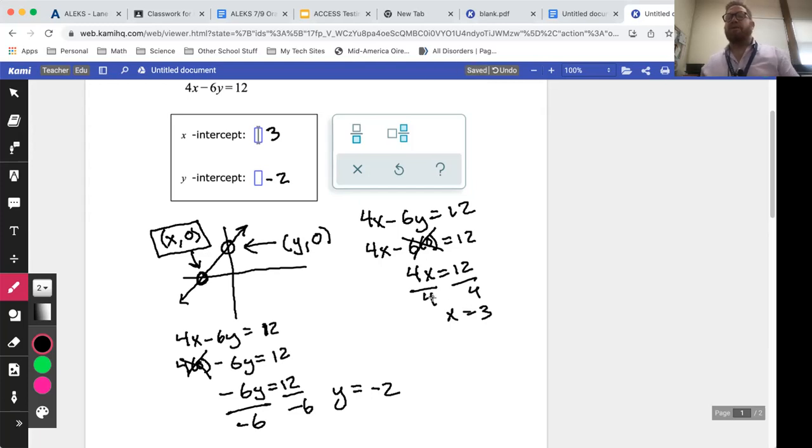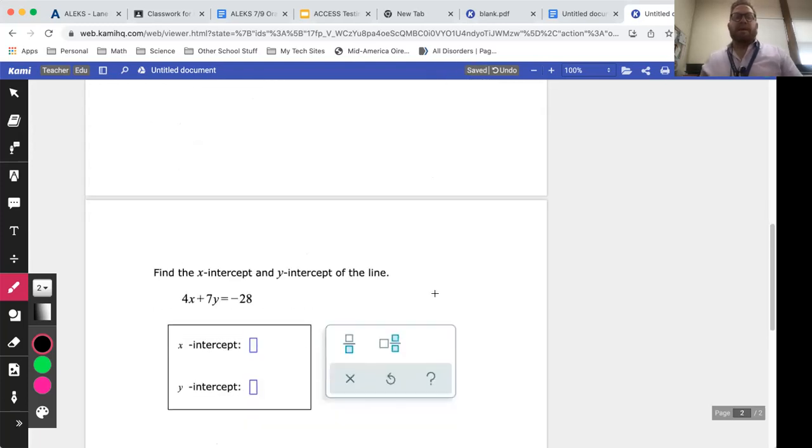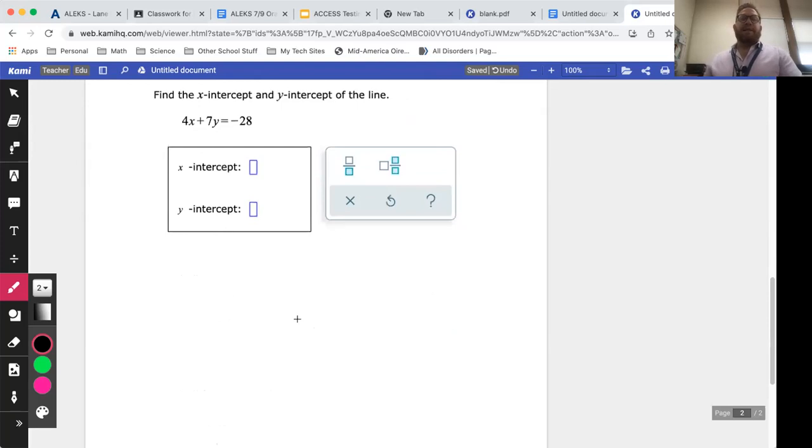Let's try one more. For this one, same concept. To solve for your X intercept, you're going to make Y equal to zero. To solve for your Y intercept, you're going to make X equal to zero. It's kind of like you make the opposite thing zero.